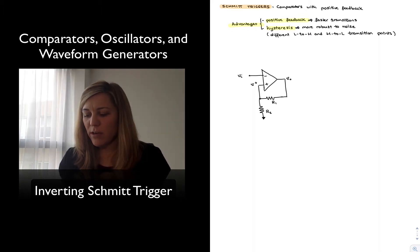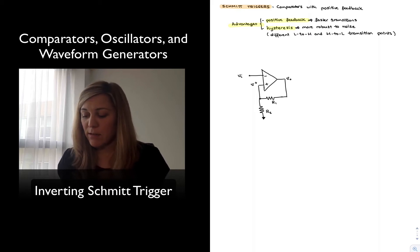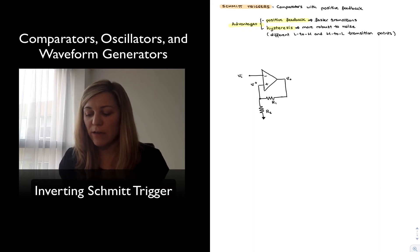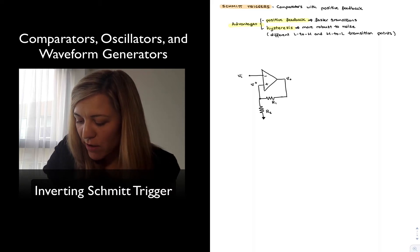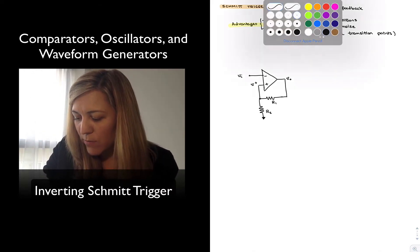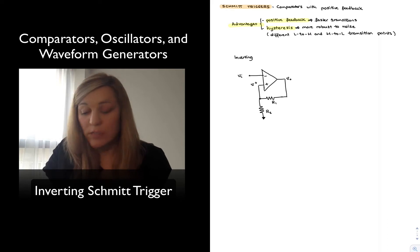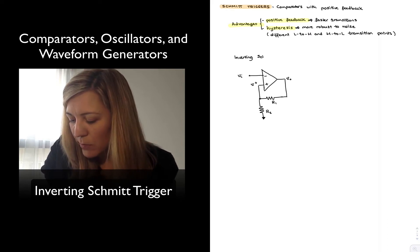We have an example here of a Schmitt trigger. We can see that there is an op-amp or a comparator configured with positive feedback — the output is being fed back to the positive input terminal. In this case, we have what's known as an inverting Schmitt trigger, because the input signal is being applied at the inverting or negative input terminal.